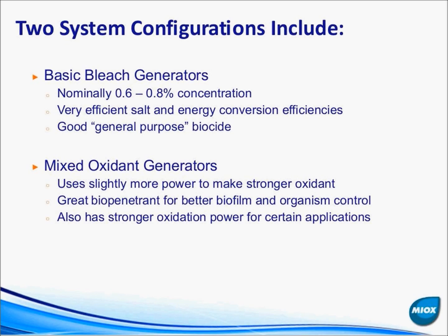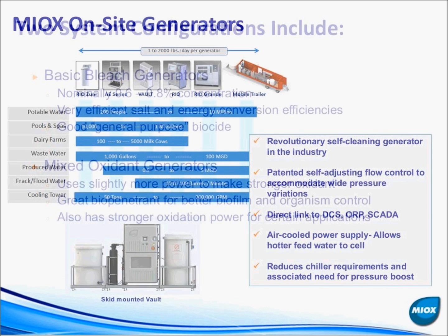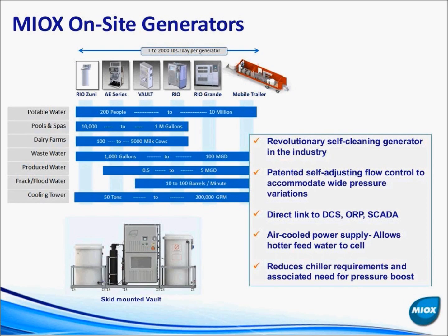Where we get into unique chemistry is our mixed oxidant series of generators. We have a separate webinar that covers these in detail, but in short: we use a different cell configuration to generate a stronger oxidant. That oxidant is a combination of sodium hypochlorite and hydrogen peroxide, and the trace hydrogen peroxide gives it some really unique chemistry characteristics.